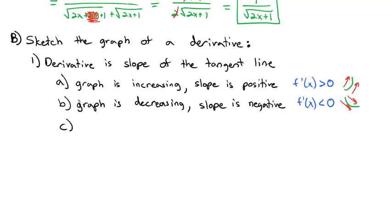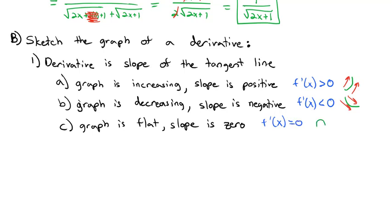If the graph hits a flat point, the slope is 0, meaning f prime of x equals 0. That can happen a few ways: the graph could go up and level out at the top, go down and level out at the bottom, or make a trough where it levels out and then continues. Right in the middle at those turning points, the tangent line levels out as the graph changes direction.